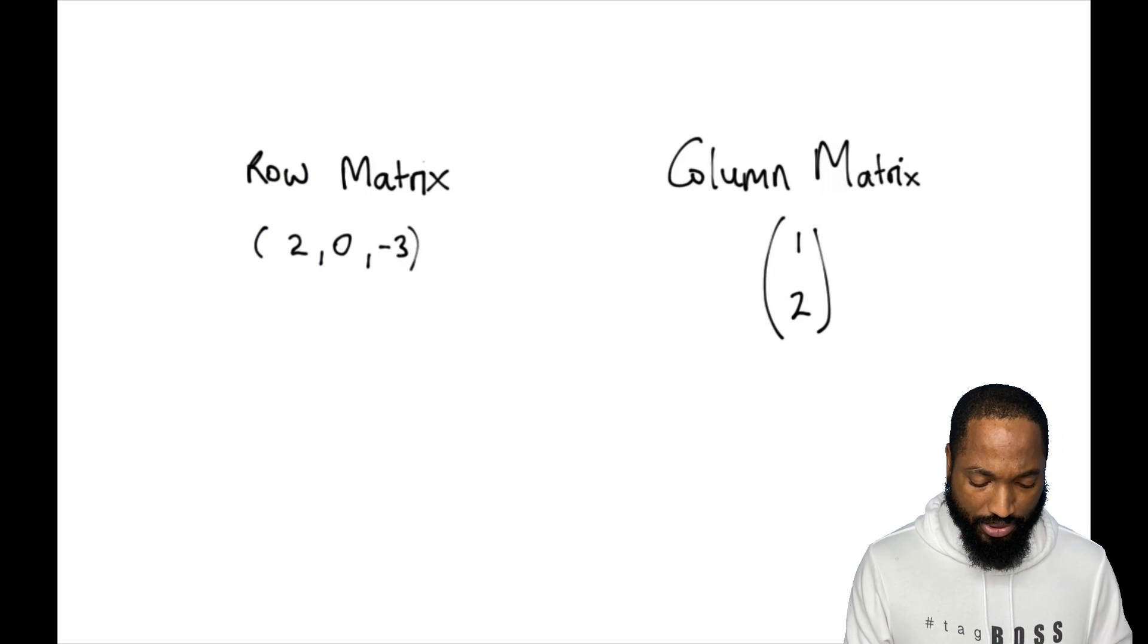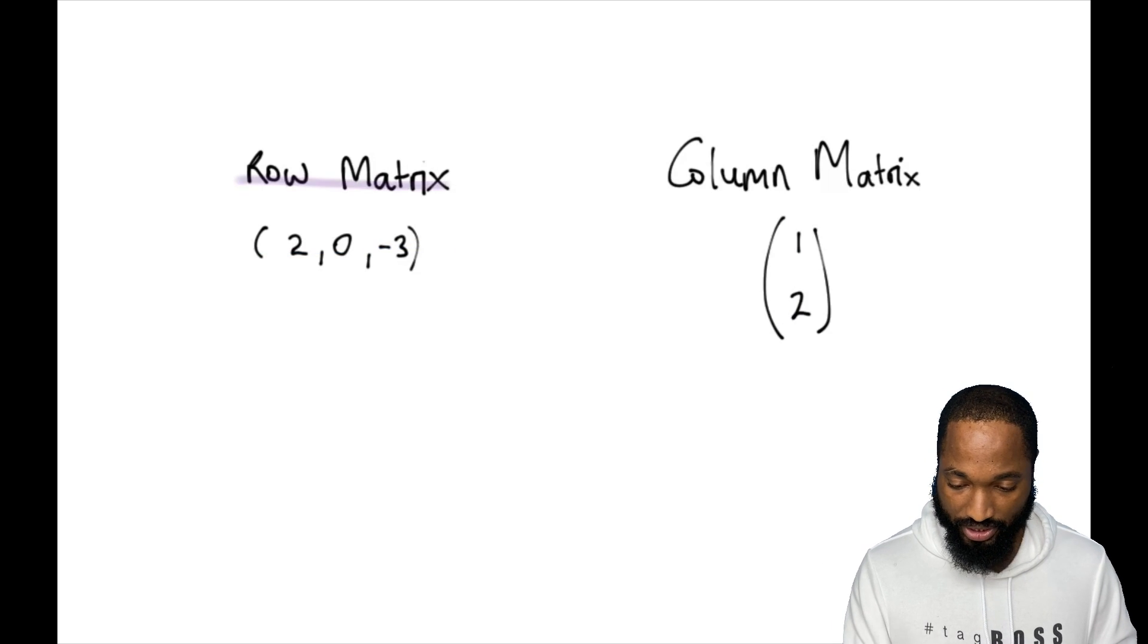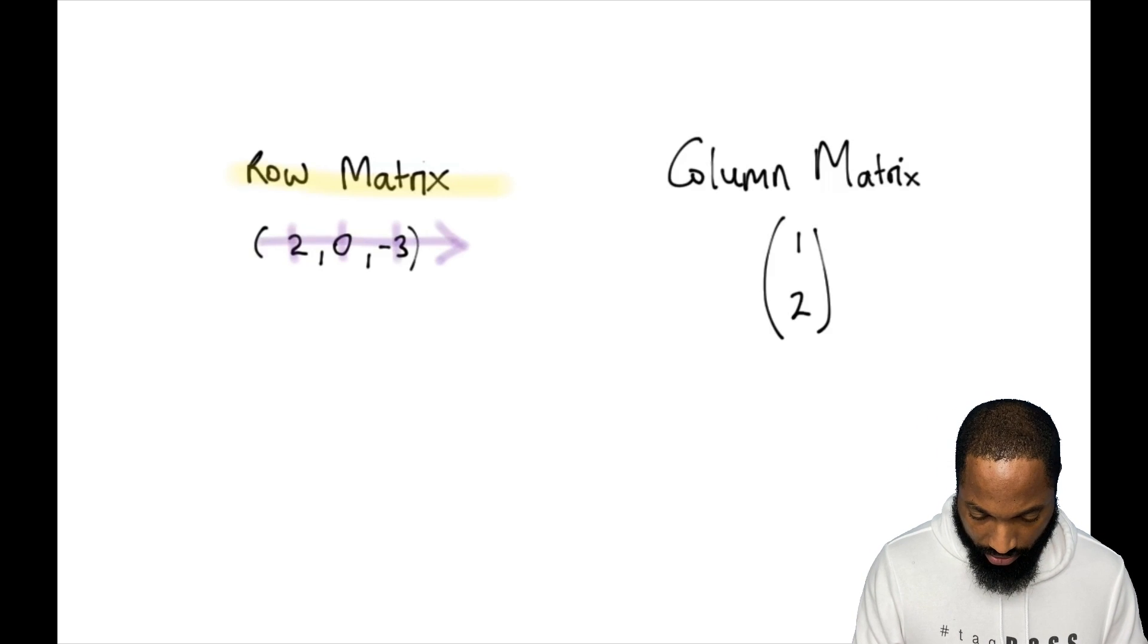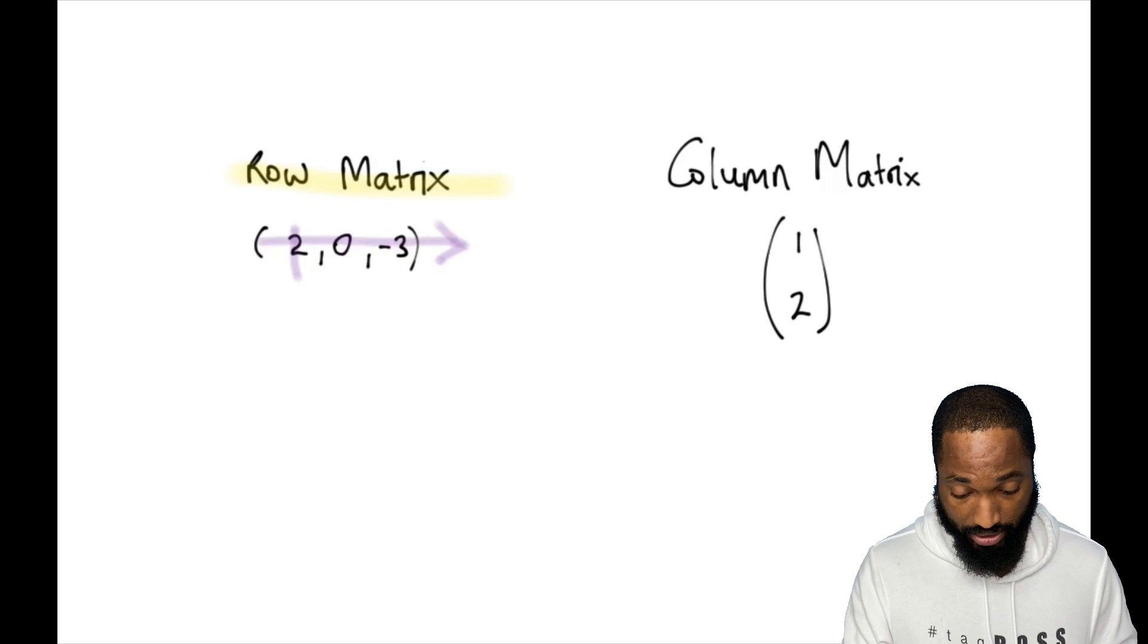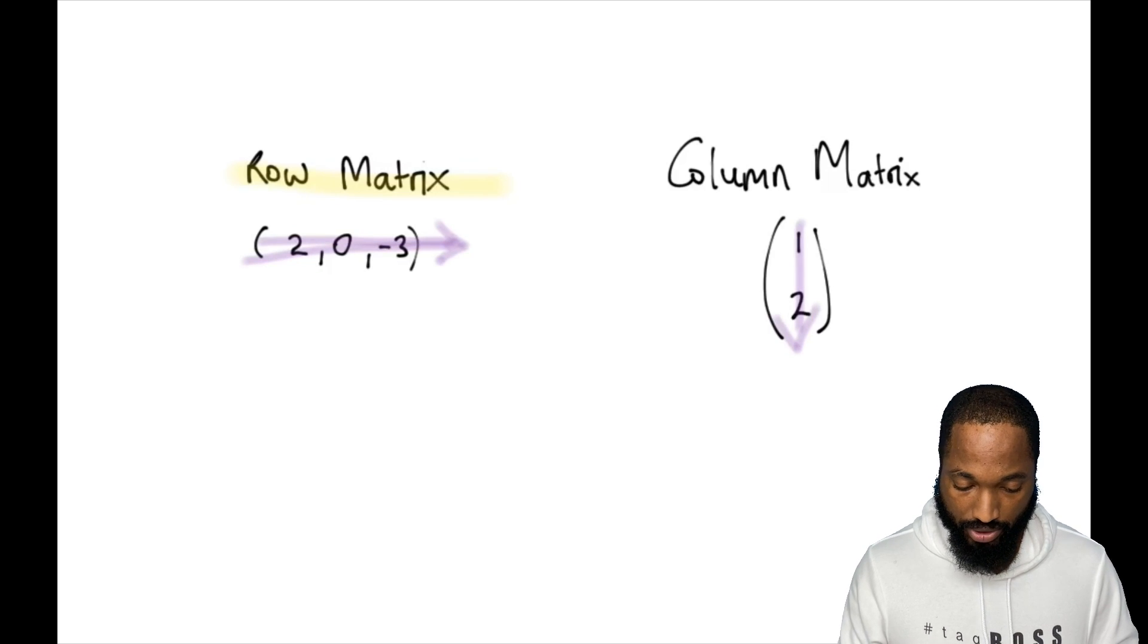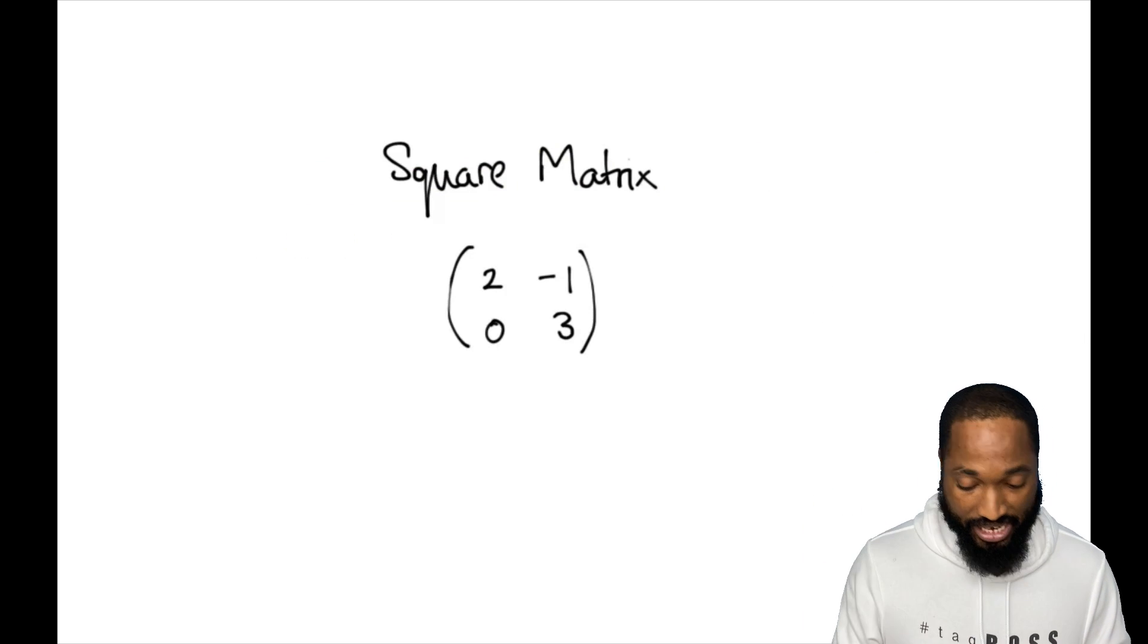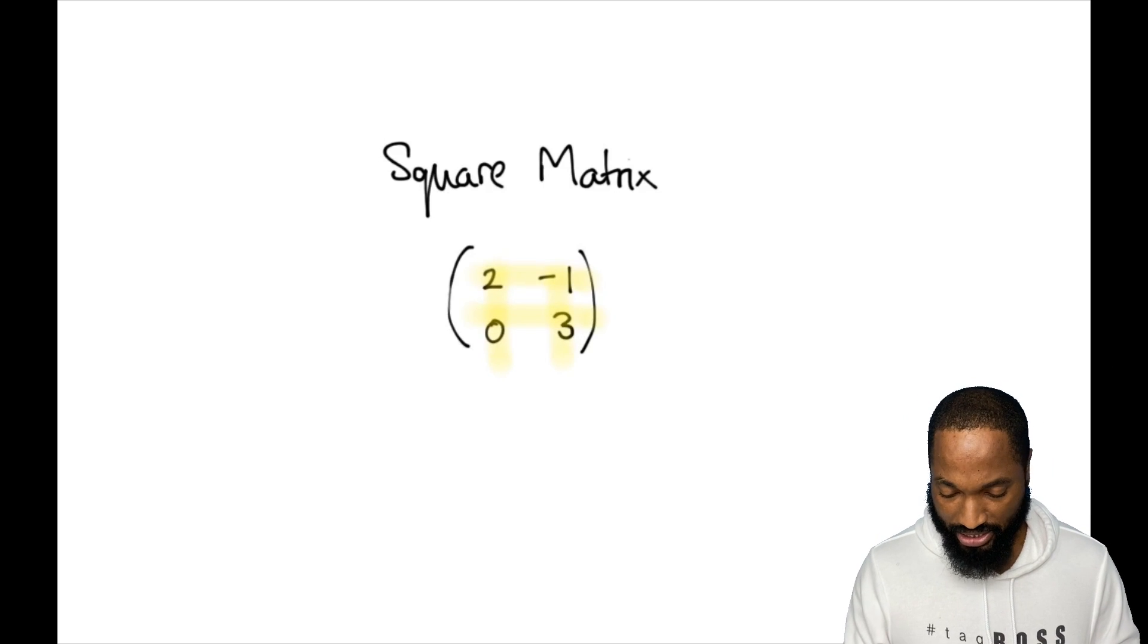Some little special names to remember: row matrix, column matrix. You can already kind of figure out why they get the name. The row matrix has to do with if you only see one row. How many columns here? One, two, three columns - but one row. Just because you see one number doesn't mean it's not a column. One, two, three columns but one row. If there's one row and one column, we'll call it a row matrix and column matrix respectively. And there's something called a square matrix - two rows, two columns. If you see that going on, that's a square matrix.